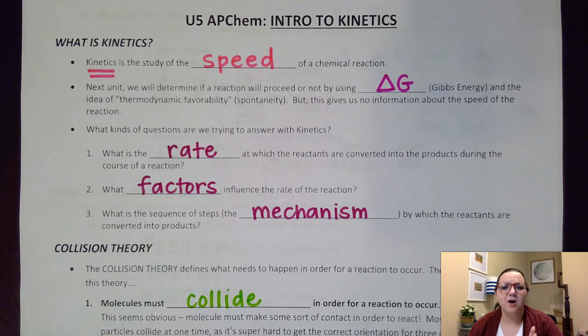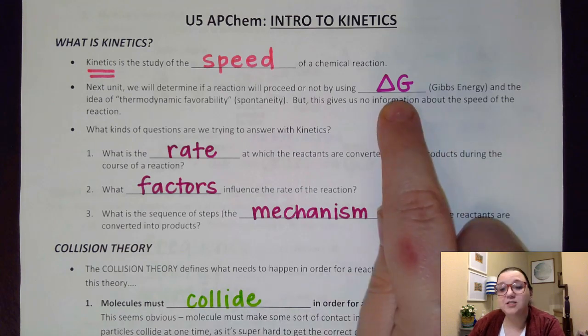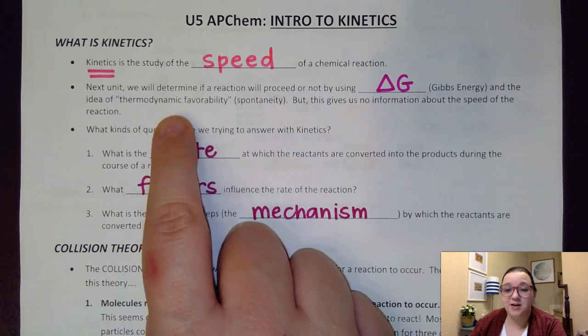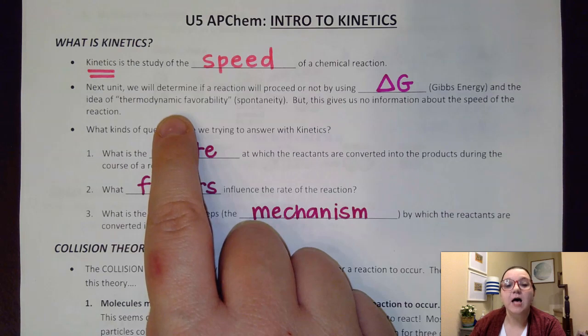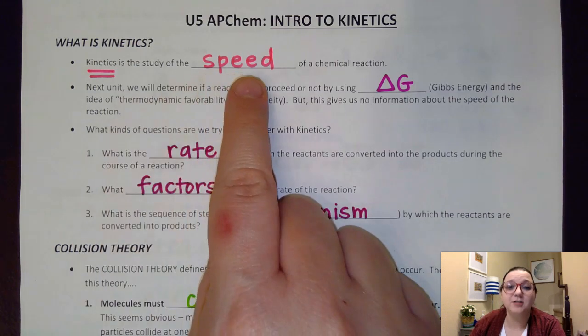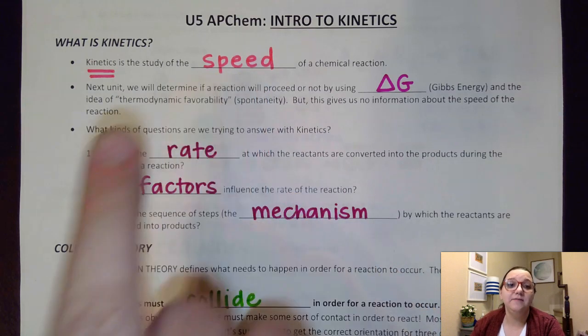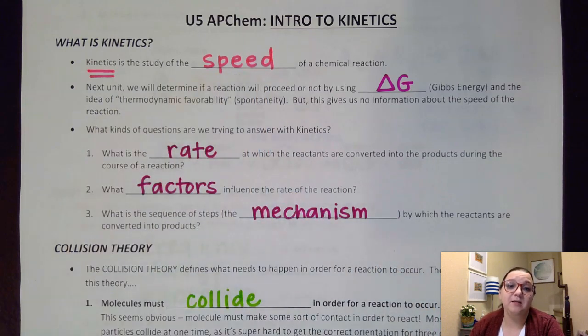Next unit we're going to talk about what is called delta G or Gibbs energy, which addresses the idea of thermodynamic favorability, whether or not a reaction will occur at a given set of conditions. But in this unit we're going to talk about how quickly that reaction is taking place if it is in fact thermodynamically favorable.